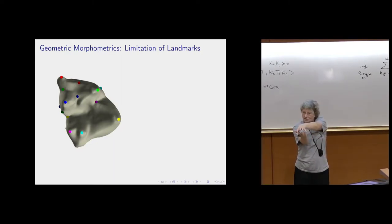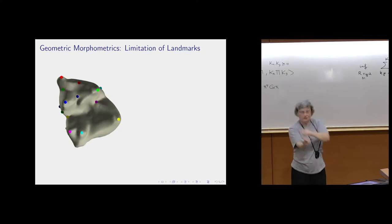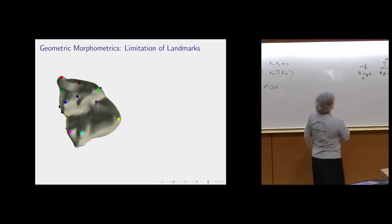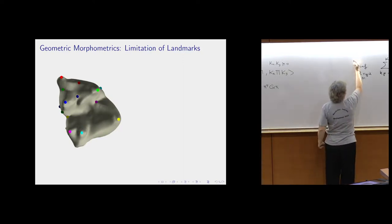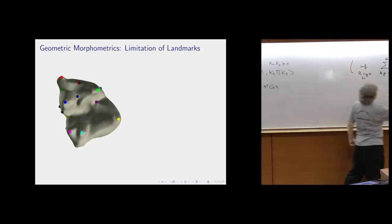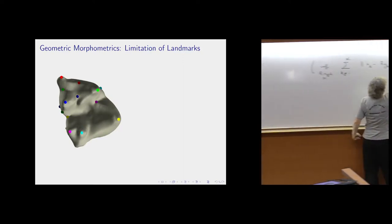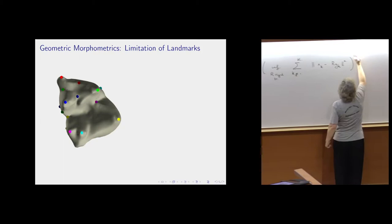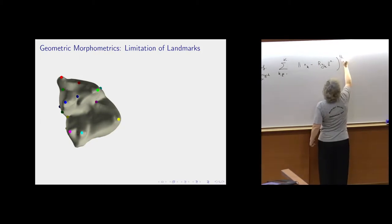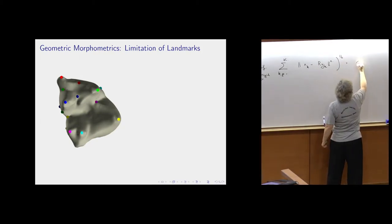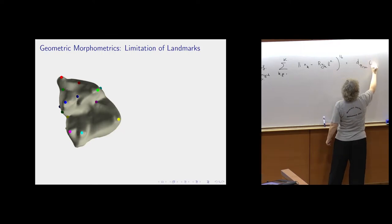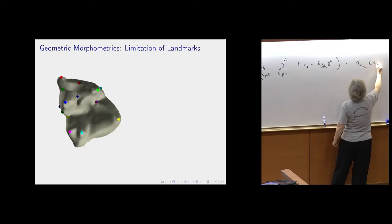...by rigid transformation, as close a relationship as you can, and then you sum all the squares of the distances, and so this gives you the procrustes distance between the two shapes.